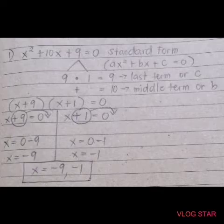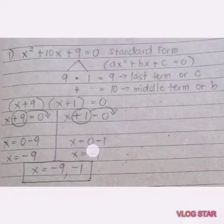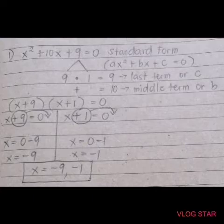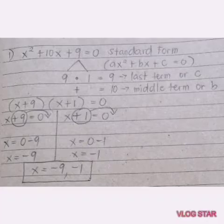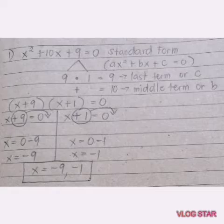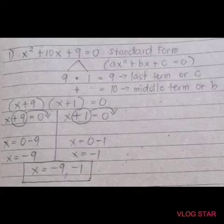So therefore, the value of x is negative 9. On the other side, transposing positive 1 to the right side gives 0 minus 1, which is negative 1. Therefore, the value of x is negative 1. The values of x are negative 9 and negative 1.